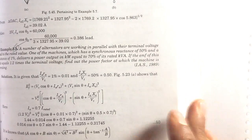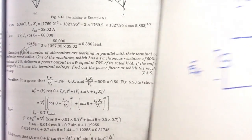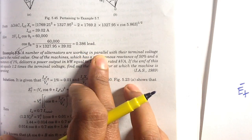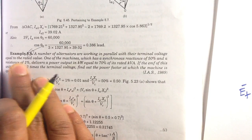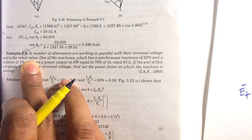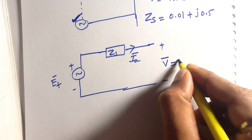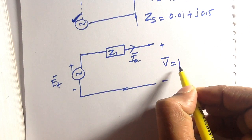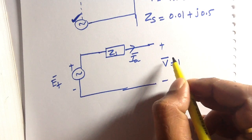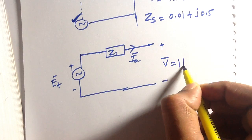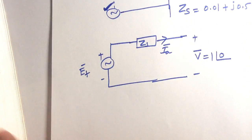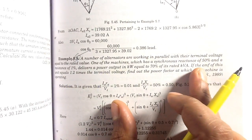It is given that all the alternators are working in parallel with their terminal voltage equal to the rated value. Rated value means 1 per unit, so the magnitude of the terminal voltage is 1 per unit. The terminal voltage is always taken as the reference, so we write it as V = 1∠0°.